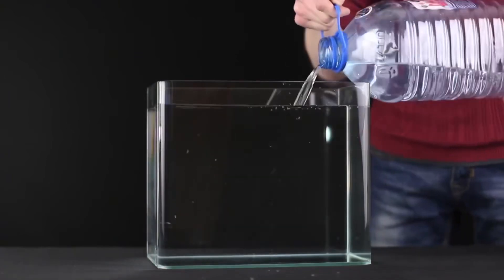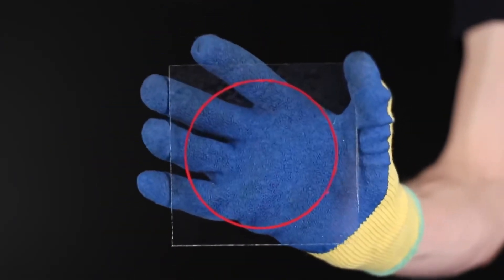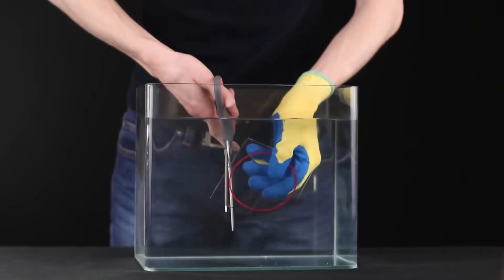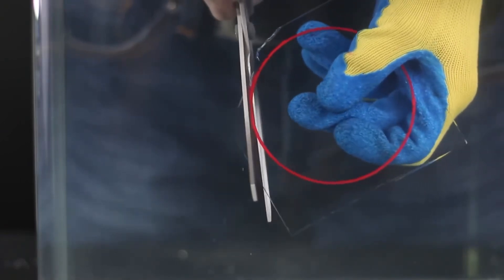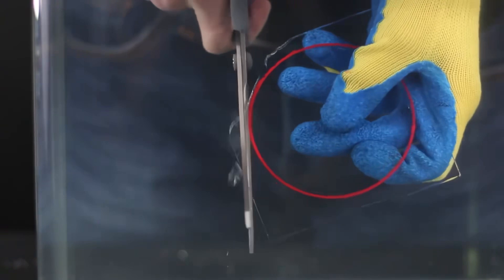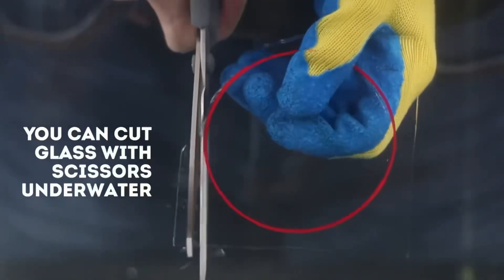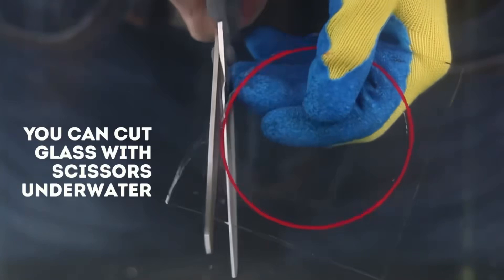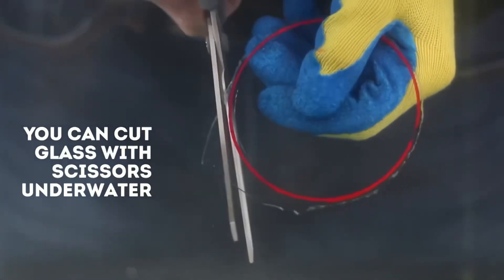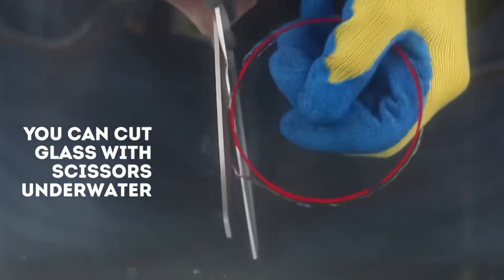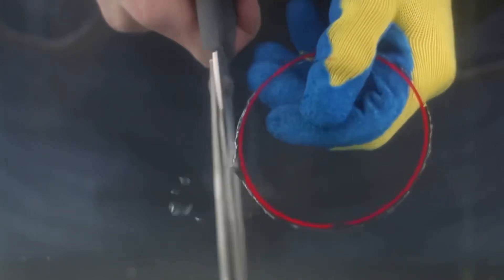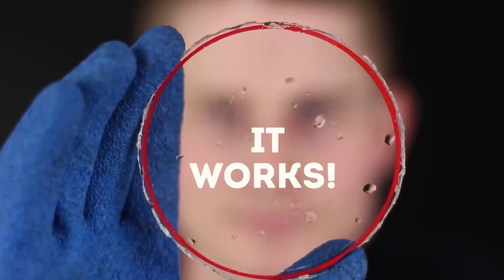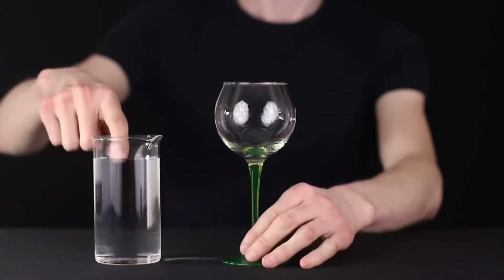Fill the aquarium with water and put a piece of glass inside with the drawn circle. Let's take scissors and attention now, cut the circle out of the glass. Yes, you heard it right. Underwater you can cut glass with scissors. It's not as easy as cutting paper, but it's possible. Here is such a glass circle we have turned out. Not quite exactly, but the main thing is that it works.